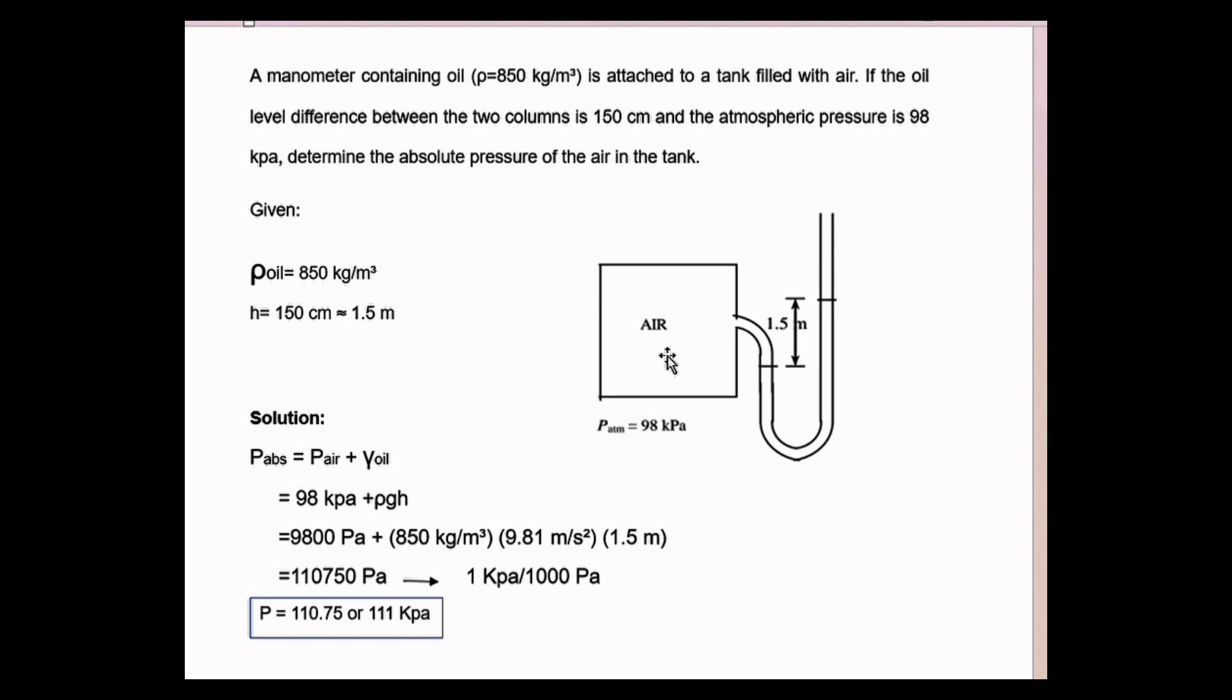So this is the tank which is filled with air at atmospheric pressure of 98 kPa and containing oil with density 850 kg/m³. First we need to write the given: density of oil is 850 kg/m³ and height is 150 cm or 1.5 m.